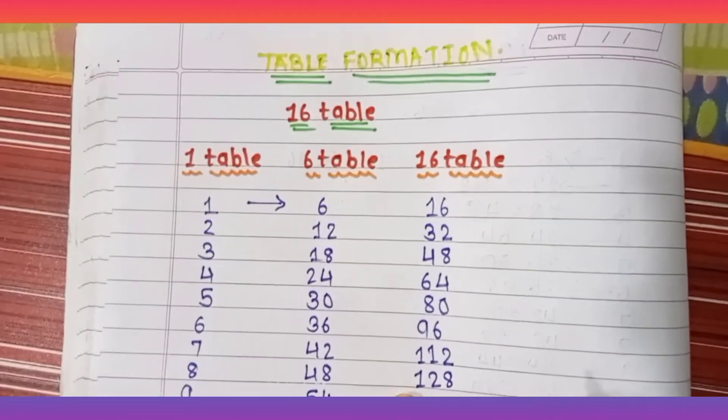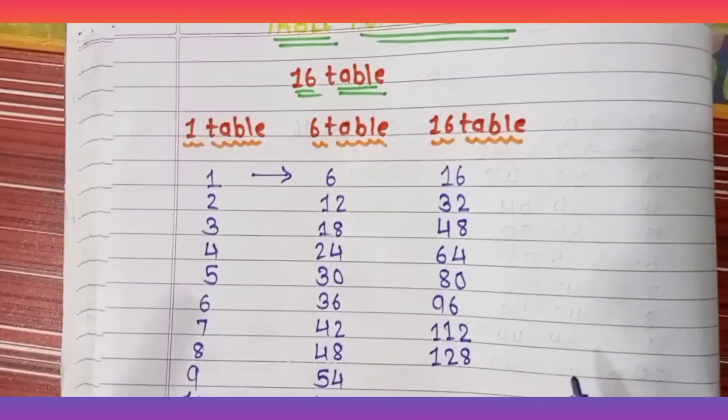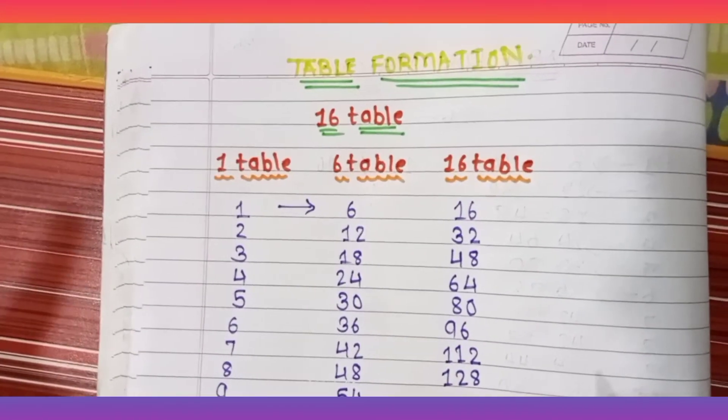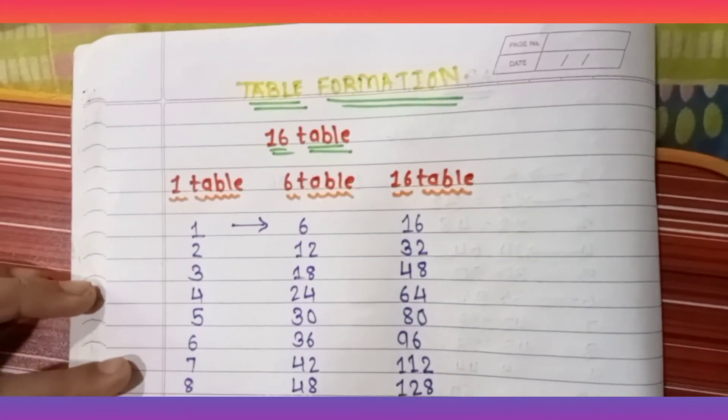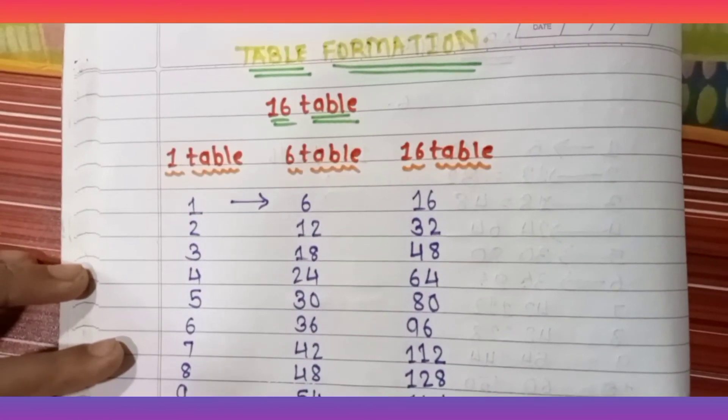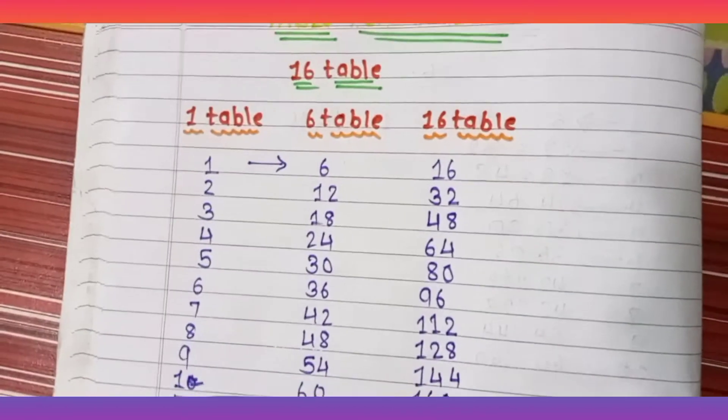8 plus 4 is 12, and write 8 as it is. If you have a calculator with you, check my table which I am making now. Without a calculator also you can make tables, it's just easy. 9 plus 5 is 14, write 14 and 4 as it is.